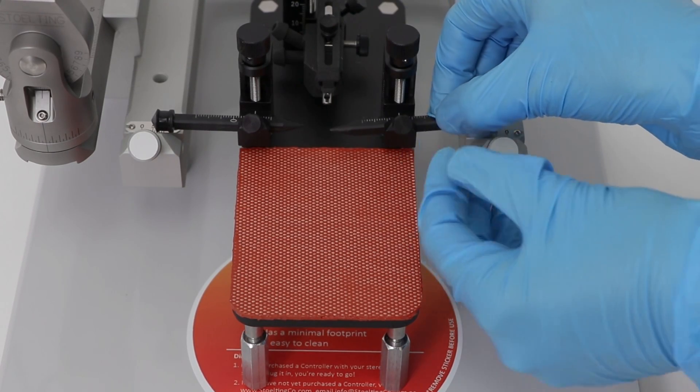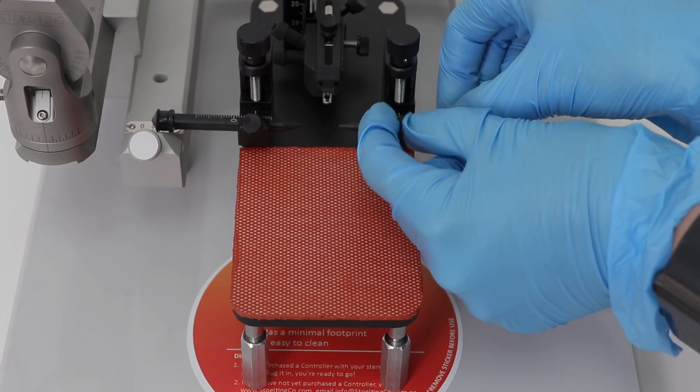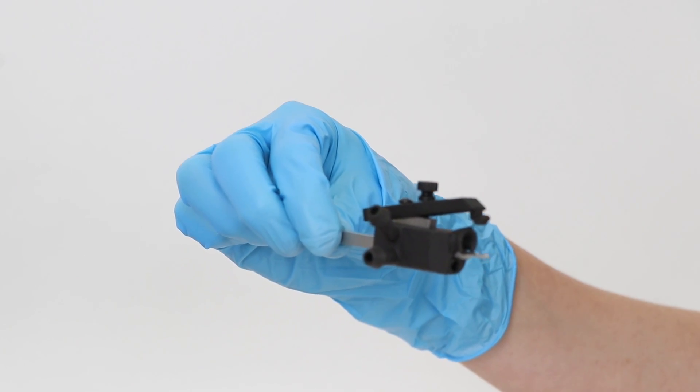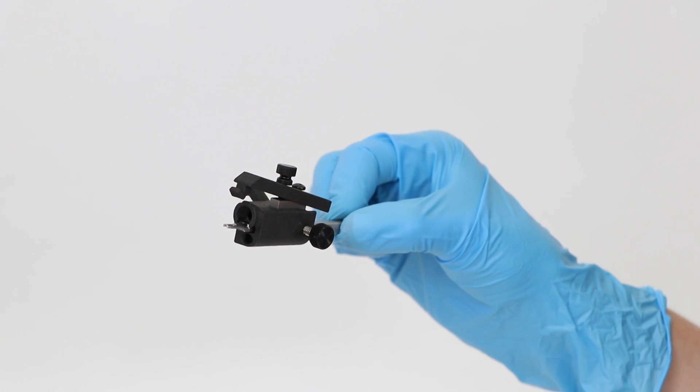Next, take the mouse ear bars and secure them in the corresponding brackets. Then secure the mouse anesthesia mask with the integrated adapter to the base accordingly.